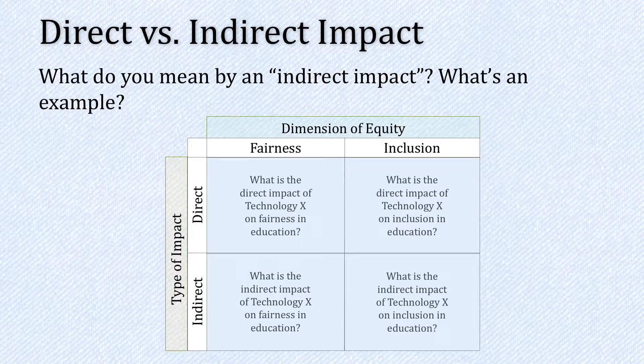A couple of you have asked about the concept of an indirect impact regarding our last critical reflection assignment. Essentially, the question is: what do you mean by an indirect impact on a dimension of equity? What's an example?